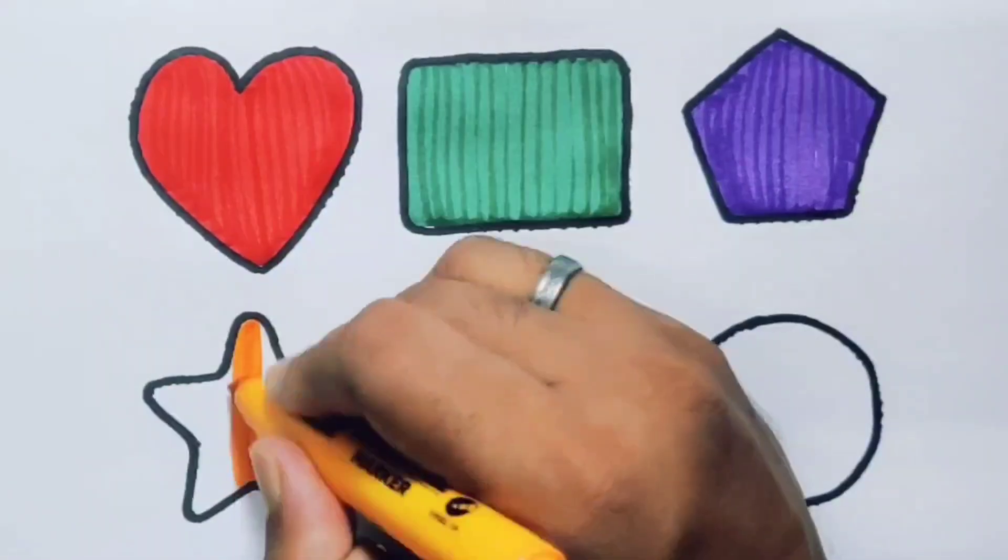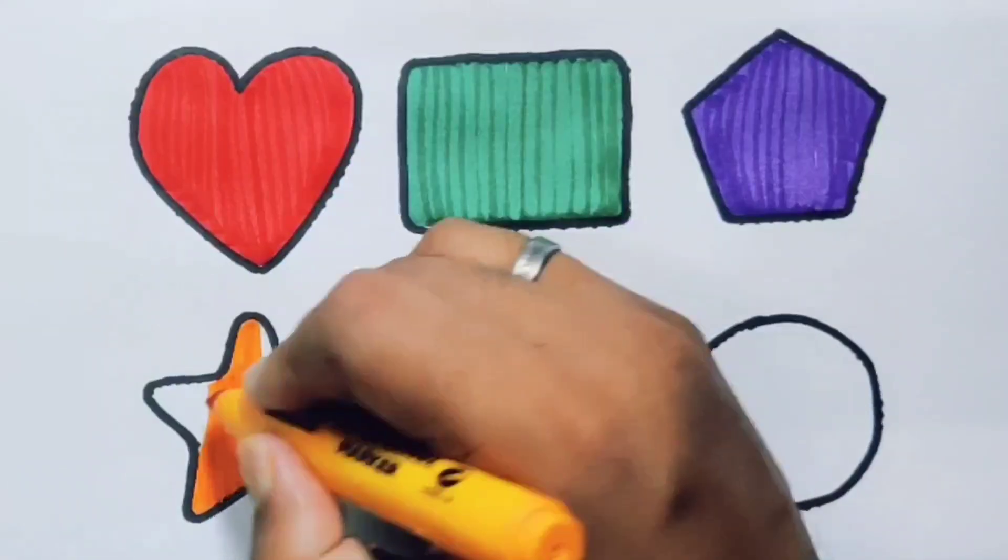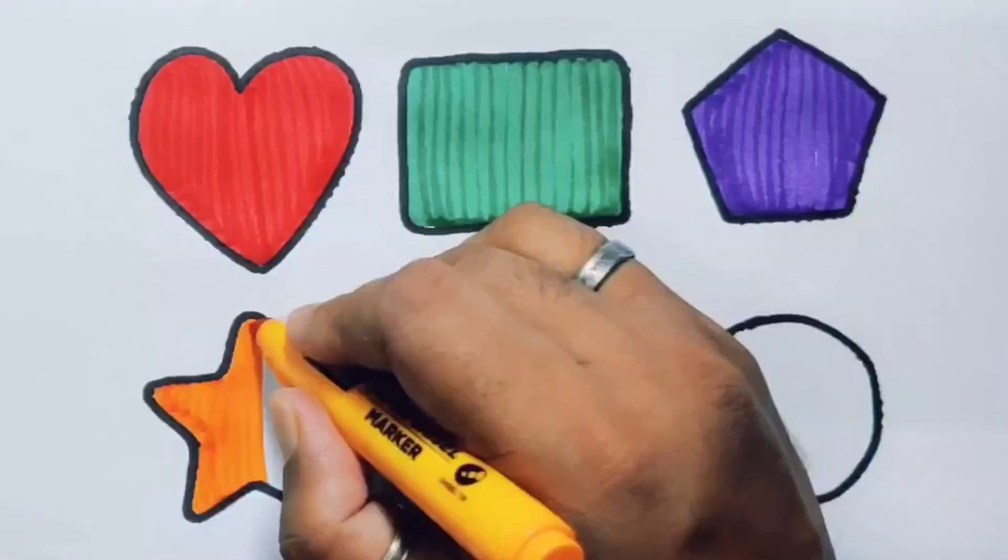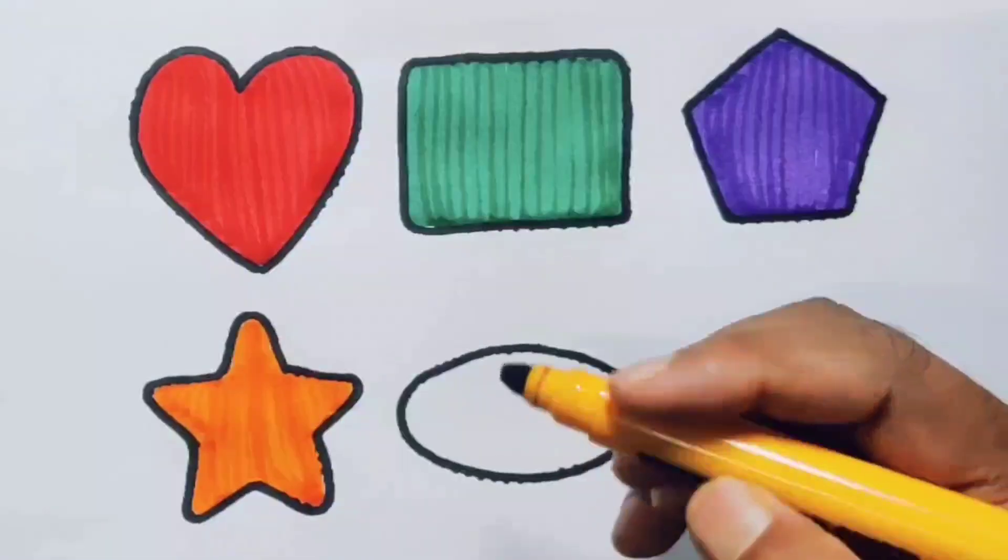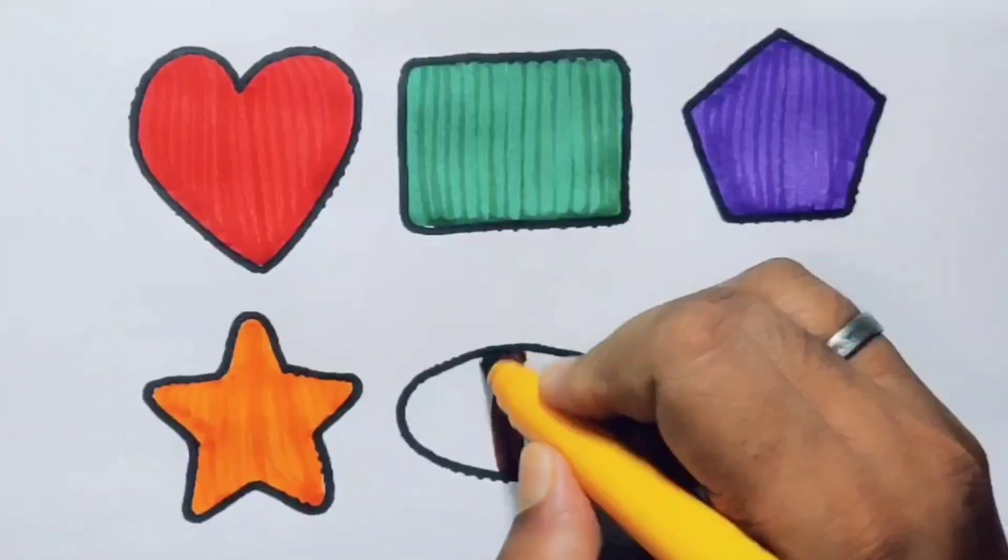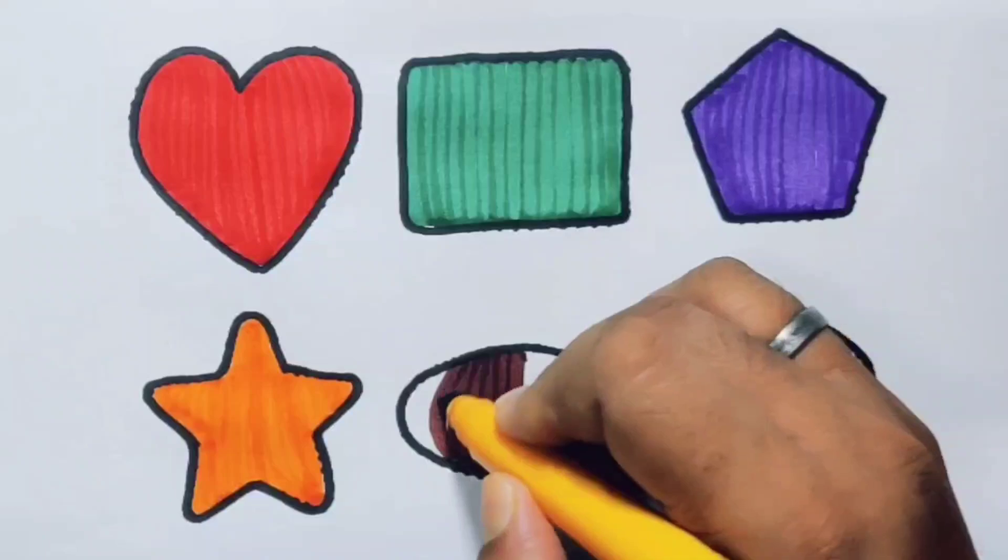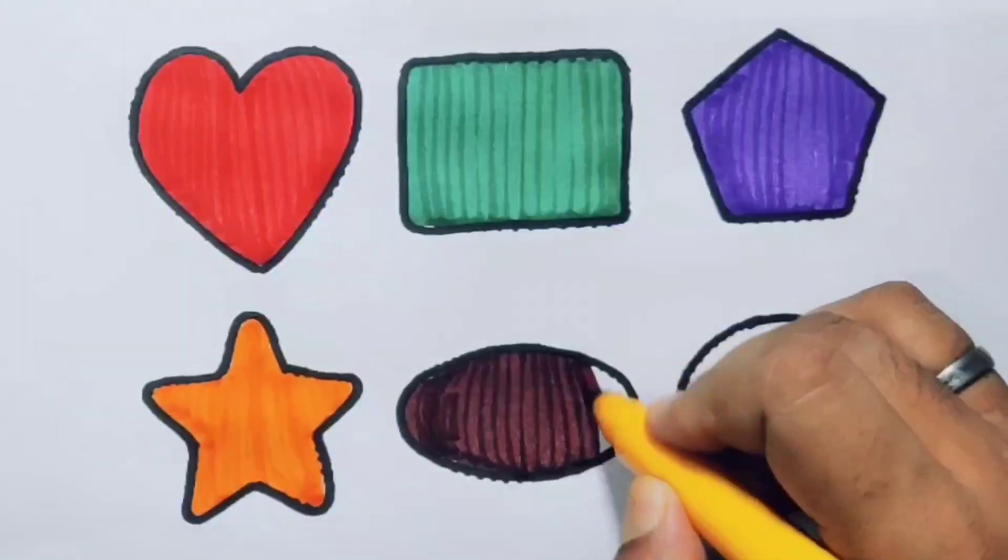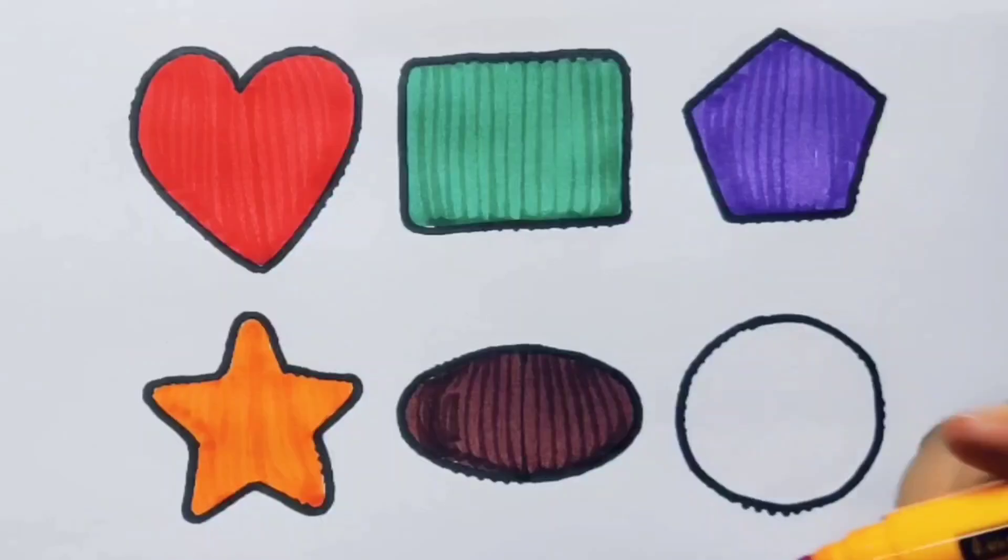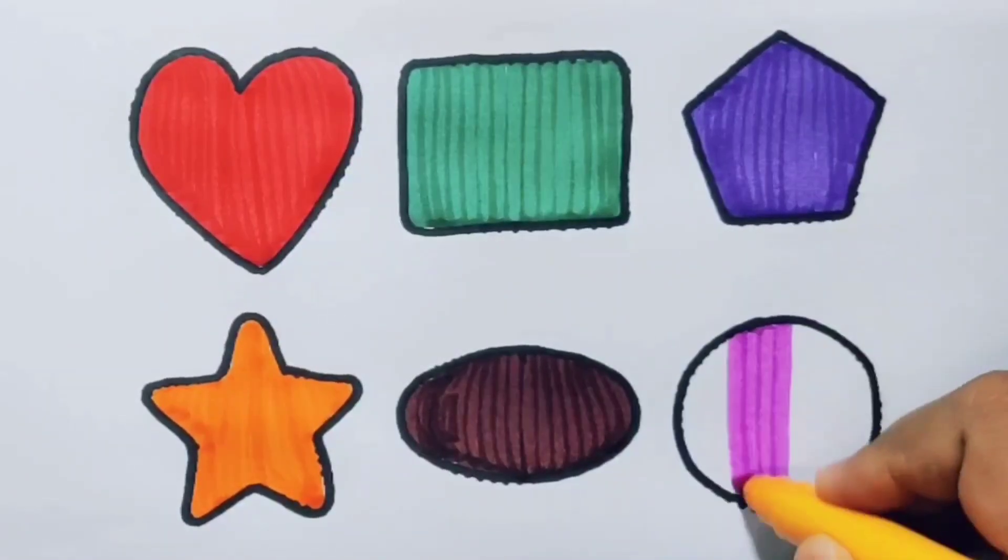Orange star. Chocolate oval. Pink circle.